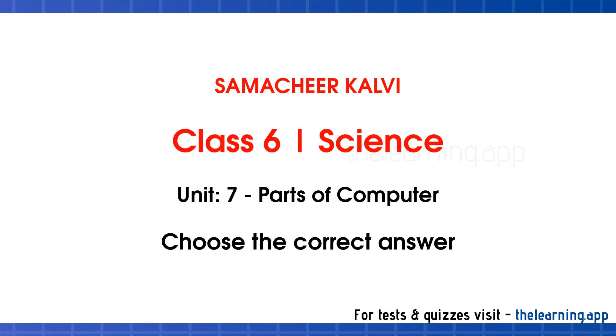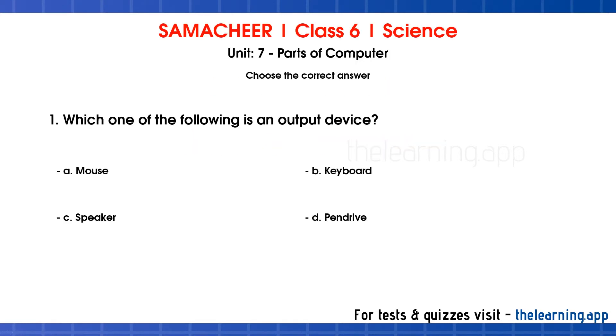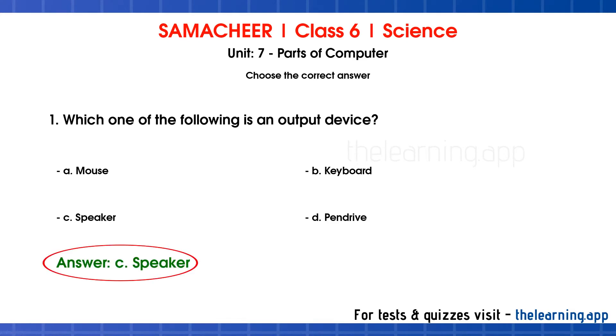First, choose the correct answer. First question: Which one of the following is an output device? Options are A) mouse, B) keyboard, C) speaker, D) pen drive. The correct answer is speaker.